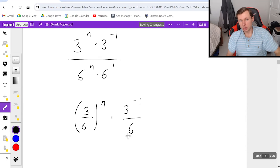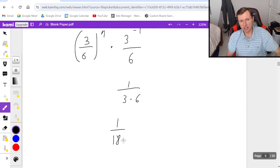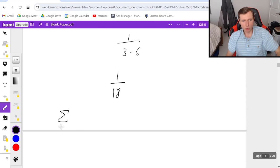Negative exponent means it's really in the denominator. So it's like one over three times six, or one over 18. And so this series is really the series from n equals zero to infinity of 1/18 times three over six, which is one half to the nth power.